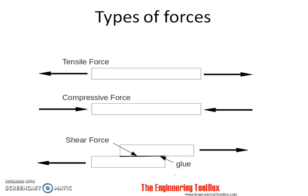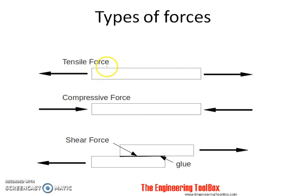There are different types of stresses depending on the type of forces acting on the members. Consider a member axially loaded and subjected to a tensile force. There are two equal and opposite pulls acting perpendicular to the cross-section of the member. This induces a resistance force inside the member opposite to the direction of the applied load, so if you take a cross-section near the end, the resistance force will be in the opposite direction.